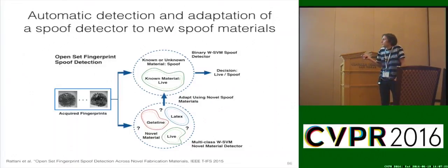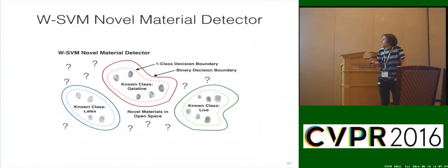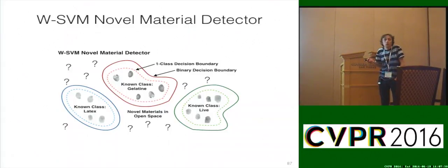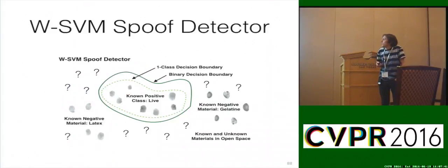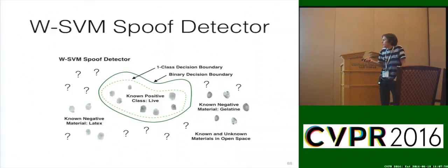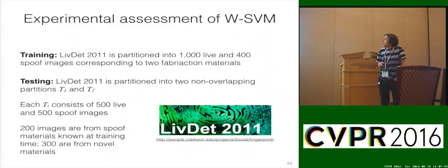So it's: detect novel stuff or known stuff, and then make a final determination in the second stage of whether or not we're dealing with a spoof. A WSVM-based novel spoof detector would do the same training process described before for the WSVM, except here we know what we're looking for within the realm of fingerprint spoofs. The detector itself would just be a binary model — class 'live' would be the positive class, and we're going to reject all of the other negative stuff coming in, whether it's known or unknown.